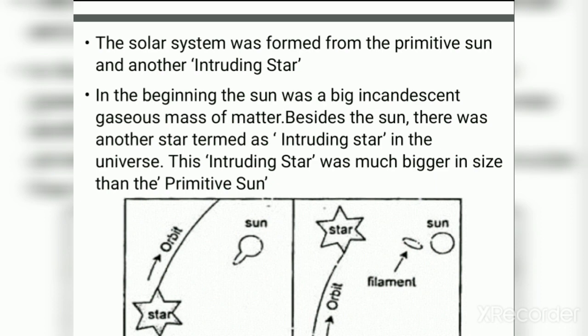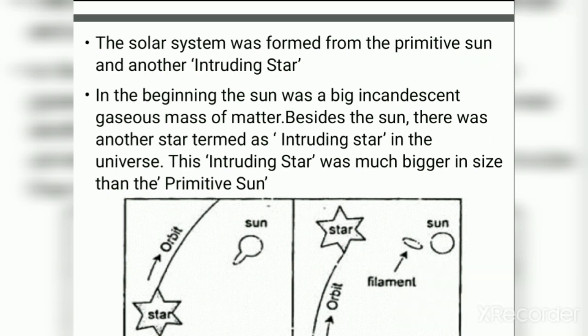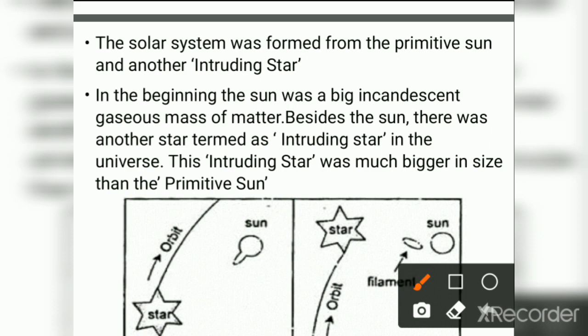The solar system was formed from a primitive Sun and another intruding star. In the beginning, the Sun was a big incandescent gaseous mass of matter. Besides the Sun, there was another star termed the intruding star. The intruding star was much bigger in size than the primitive Sun. The intruding star was moving along a path so as to come near to the primitive Sun, creating a greater impact of tidal force.